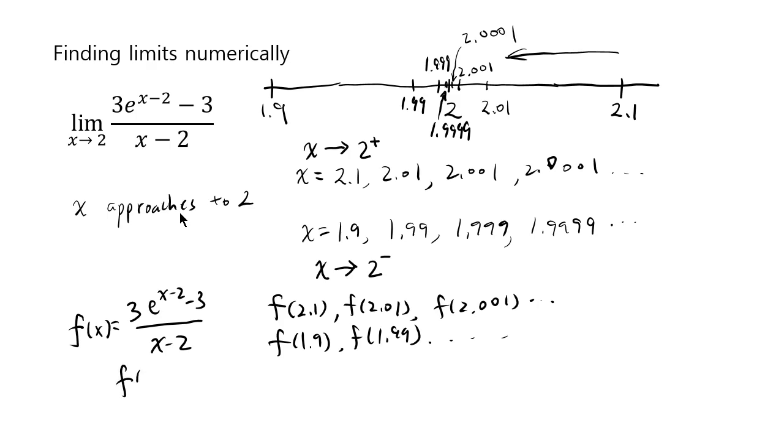I'll just do f of 2.1 as an example. That means x is replaced by 2.1. So it's 3 times e to the... I'm sorry, 2.1 minus 2 is 0.1, right? 3e^0.1 minus 3, and 2.1 minus 2 is 0.1. And at this point, I really need my calculator.